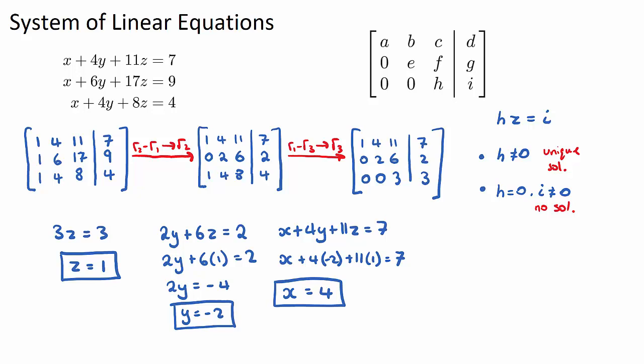And the final one is if h is zero, and i is zero. So what we're going to get there is zero times z will equal zero. Now that means that z could have been anything, because zero times four is zero, zero times ten is zero, zero times a million is zero. So z could be an infinite amount of things. So if we get, if we have h is zero and i is zero, if both of these two terms are zero, we're going to get an infinite number of solutions.